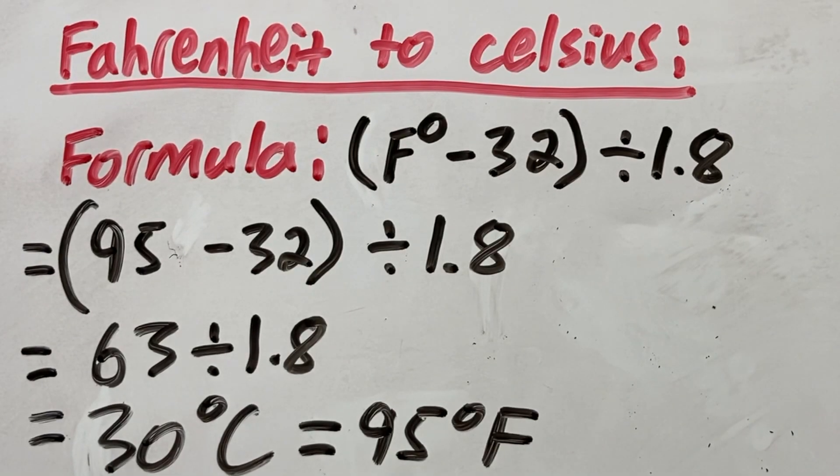So we know that 95 degrees Fahrenheit is equal to 30 degrees Celsius.